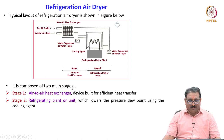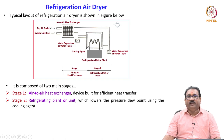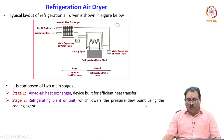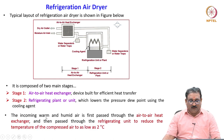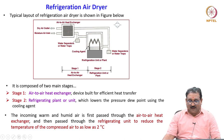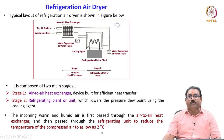It is composed of two stages: stage 1 and stage 2. In stage 1, the air-to-air heat exchanger is a device built for efficient heat transfer. Stage 2 is the refrigerating plant or unit, which lowers the pressure dew point using the cooling agent. The incoming warm and humid air is first passed through the air-to-air heat exchanger and then to the refrigeration unit to reduce the temperature of the compressed air to as low as 2 degrees centigrade.